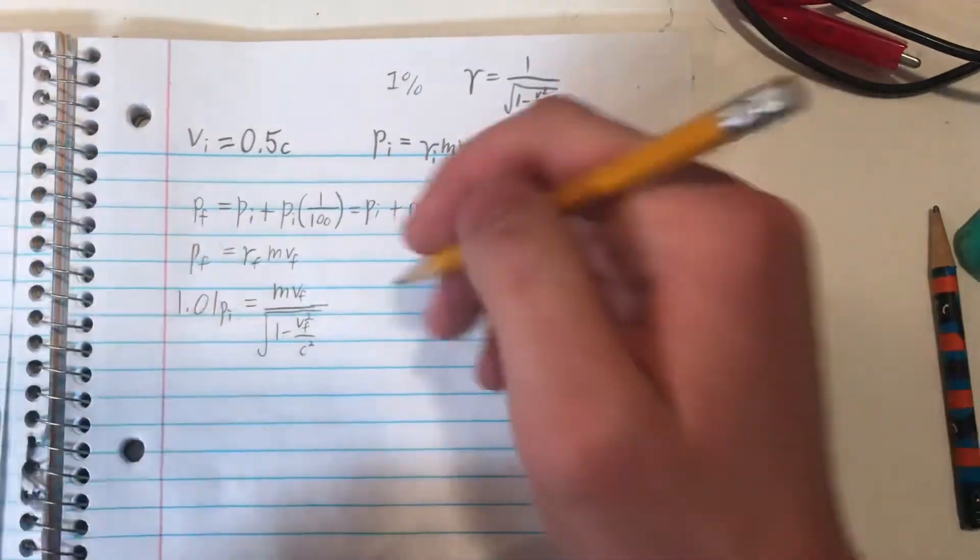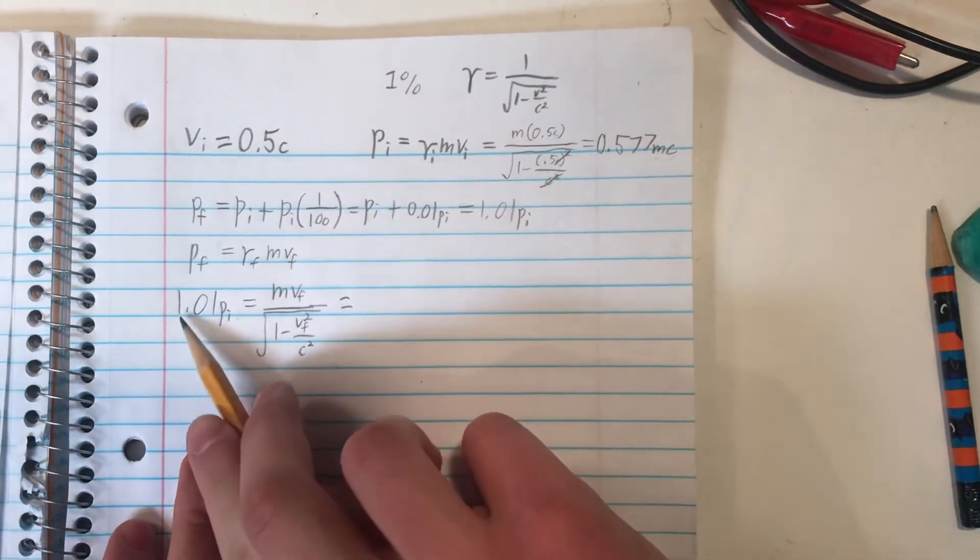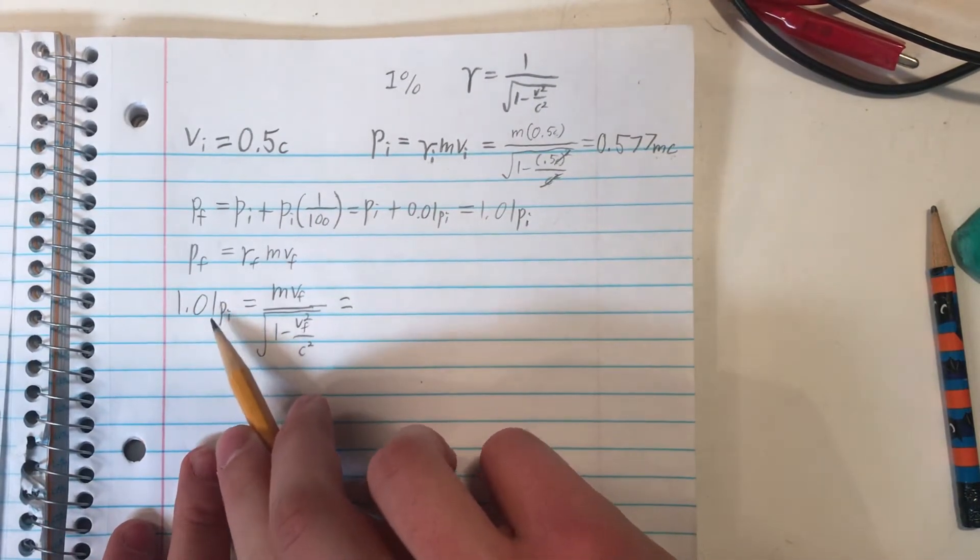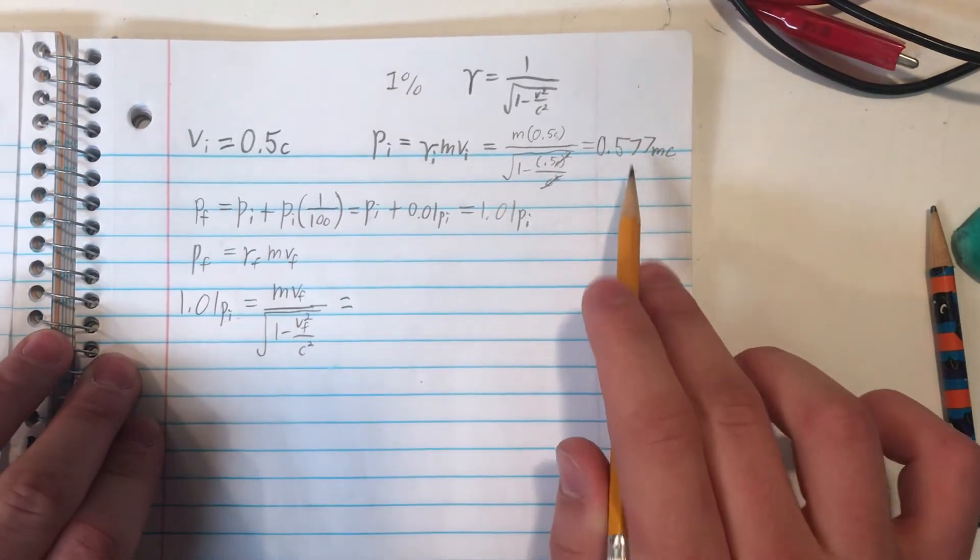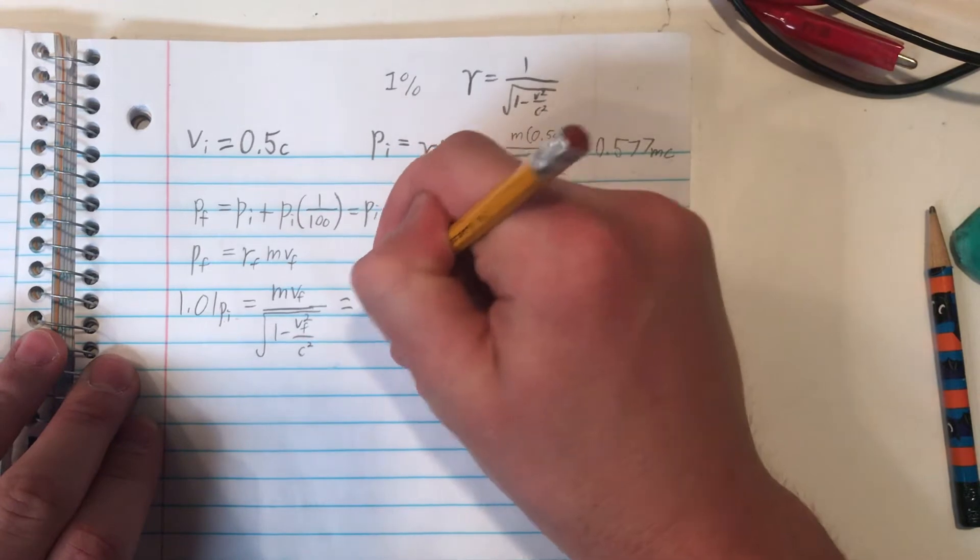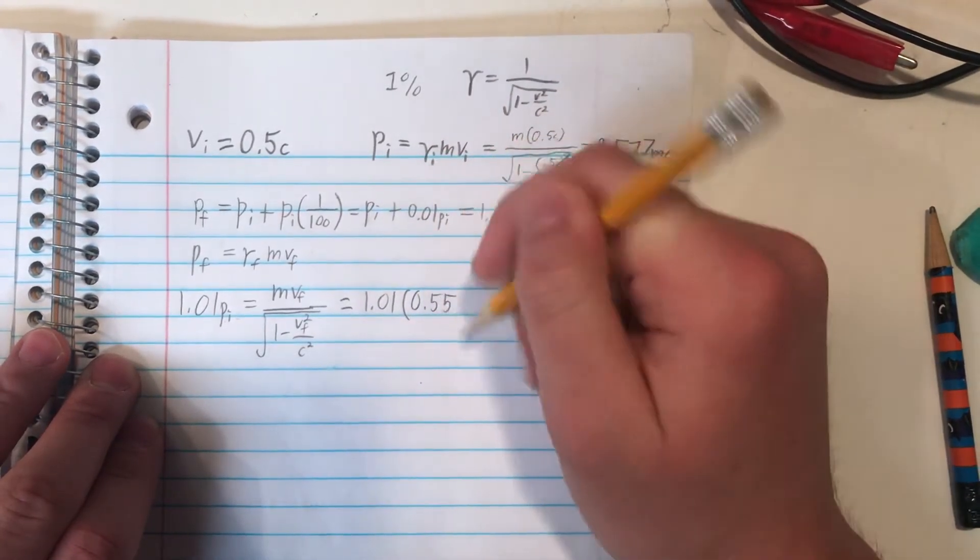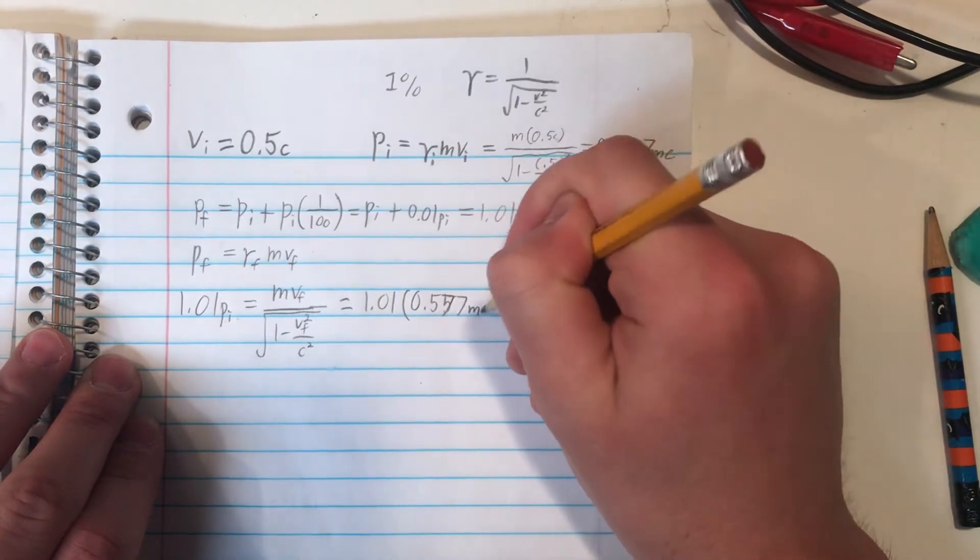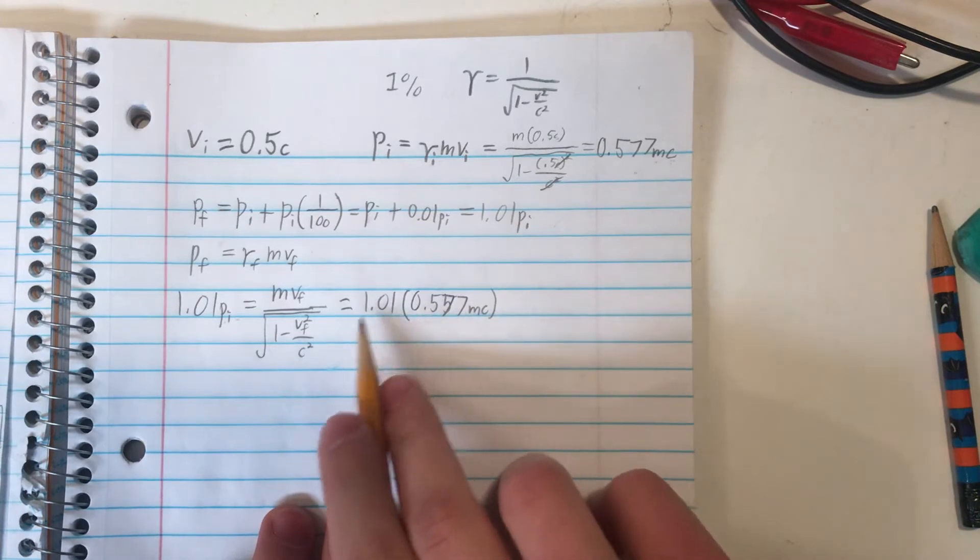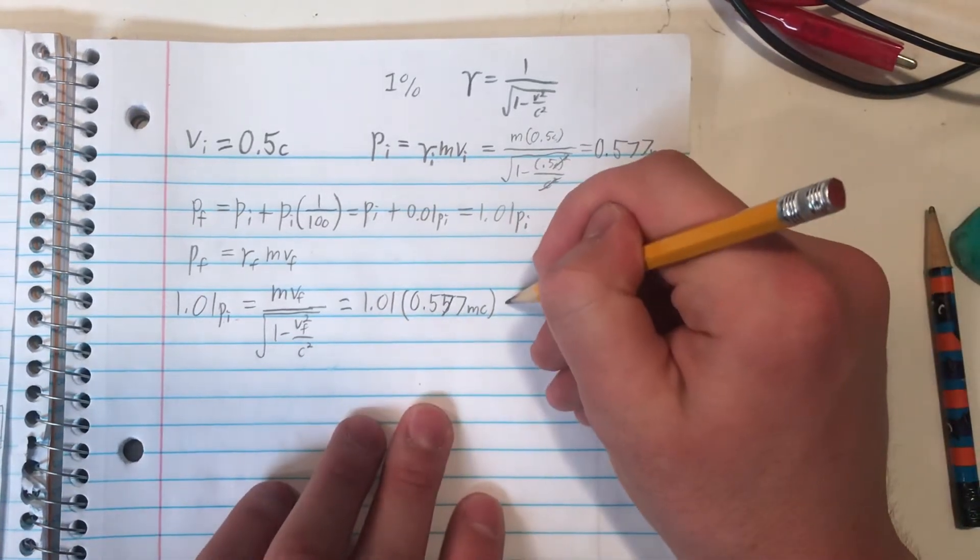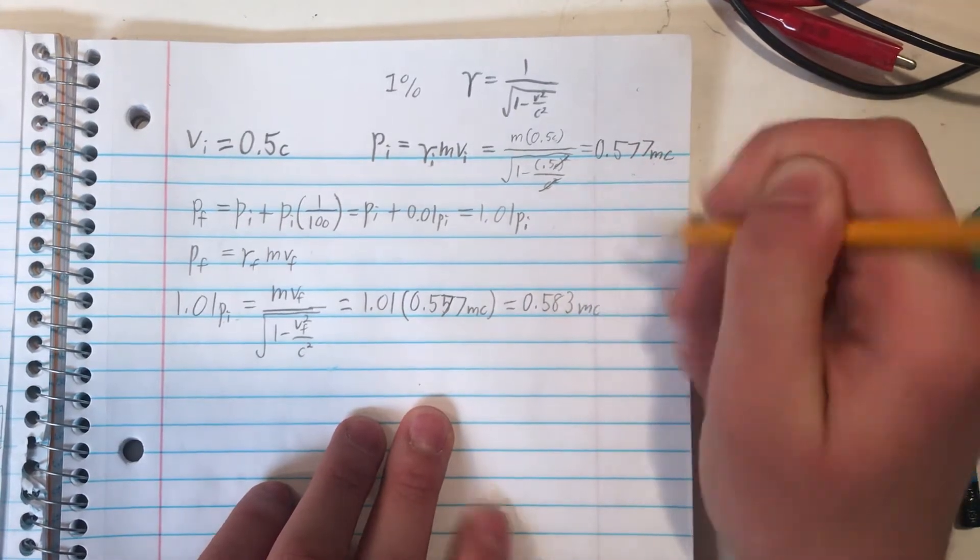So again, we're going to want to do some approximating here. So 1.01 p sub i is just equal to 1.01 times the approximation we found for the momentum. So that's about 1.01 times 0.577 mc. And rewriting this out, doing a little multiplication here in your calculator, this is about equal to 0.583 times mc.